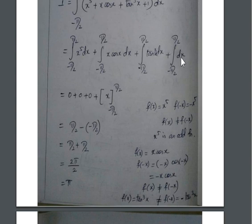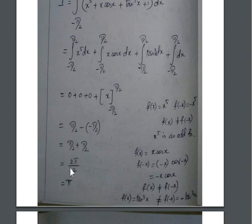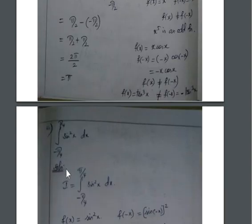Integrating the constant term 1 gives x. Applying limits from −π/2 to π/2: π/2 − (−π/2) = π/2 + π/2 = 2π/2. Therefore the answer is π.